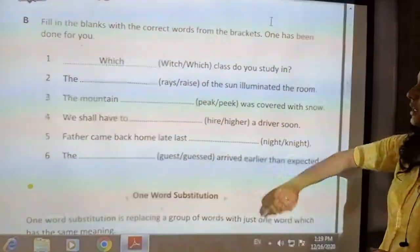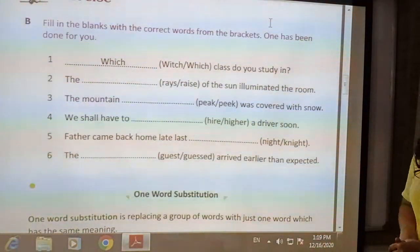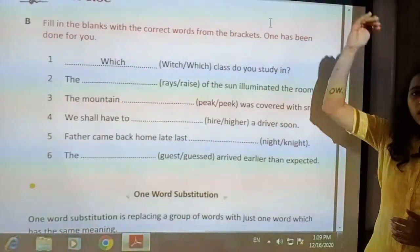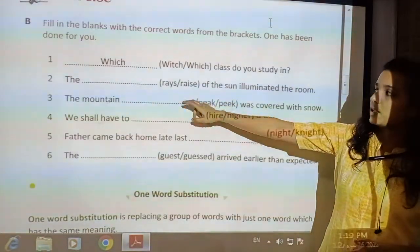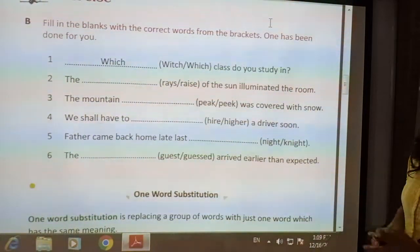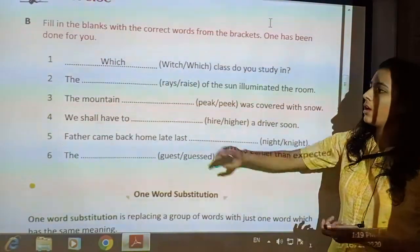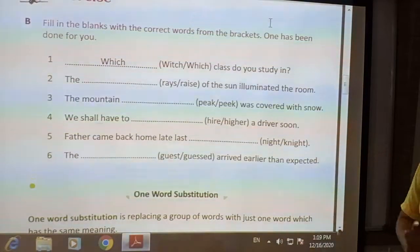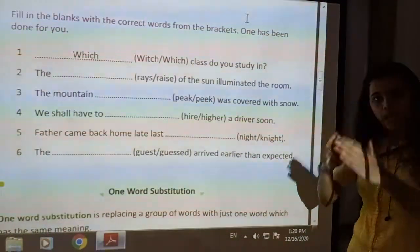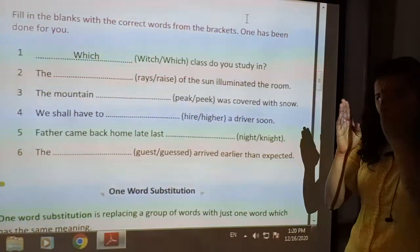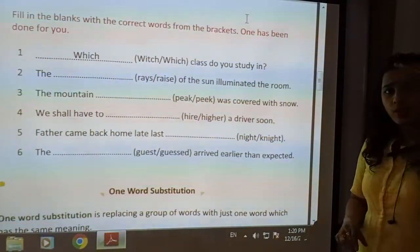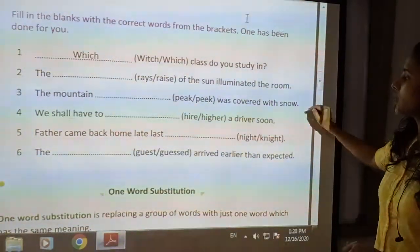Next: 'The dash of the sun illuminated the room.' The options are R-A-Y-S, rays, and R-A-I-S-E, raise. Next: P-E-A-K, peak, means the highest point of a mountain, and P-E-E-K, peek, means to look secretly. For the sentence about the mountain, the correct word is P-E-A-K, peak: 'The mountain peak was covered with snow.'